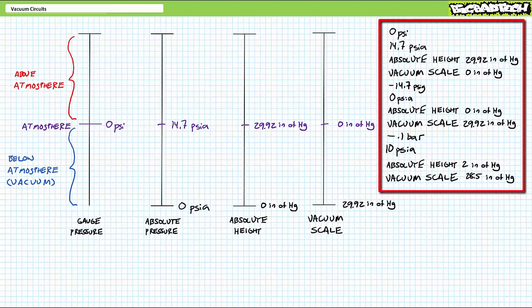Which of these measurements is the strongest vacuum? 0 PSI gauge, 14.7 PSI absolute, an absolute height rating of 29.92 inches of mercury, a vacuum scale rating of 0 inches of mercury, a gauge rating of negative 14.7 PSI gauge, an absolute rating of 0 PSI absolute, an absolute height rating of 0 inches of mercury, a vacuum scale rating of 29.92 inches of mercury, and just to make it fun, negative 0.1 bars, 10 PSI absolute, 2 inches of mercury in the absolute height scale, and 28.5 inches of mercury in the vacuum scale.